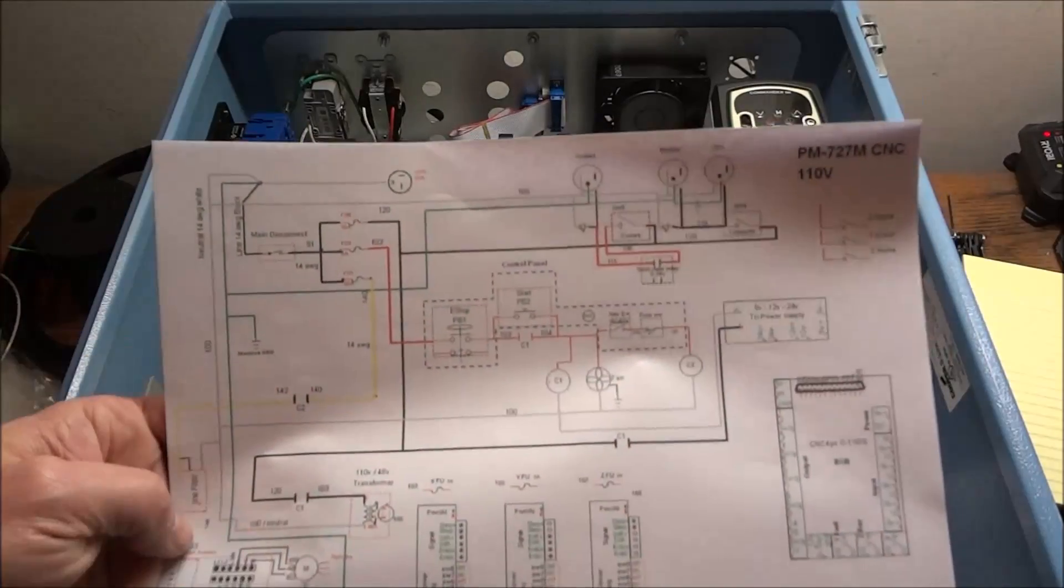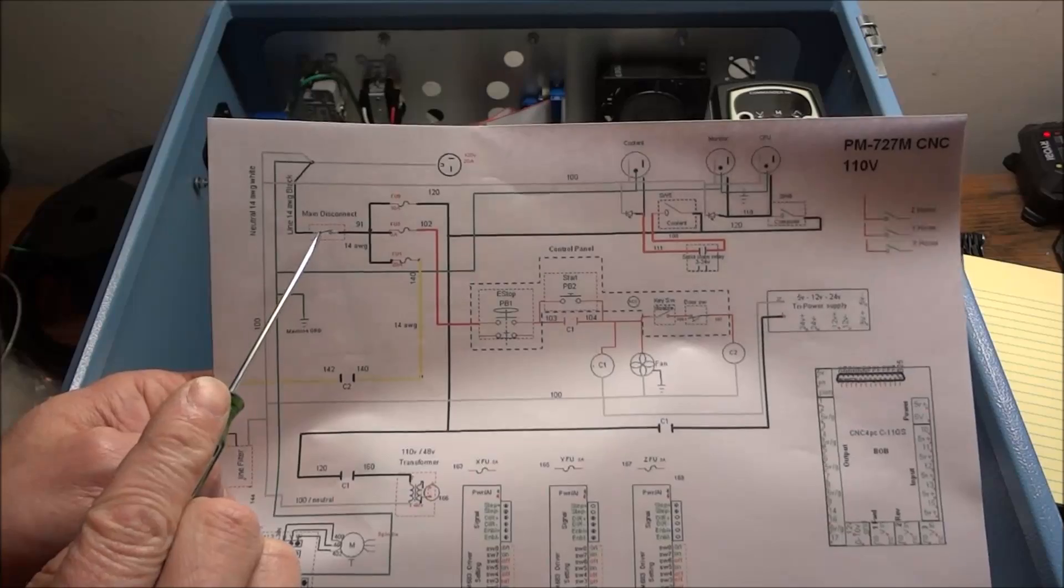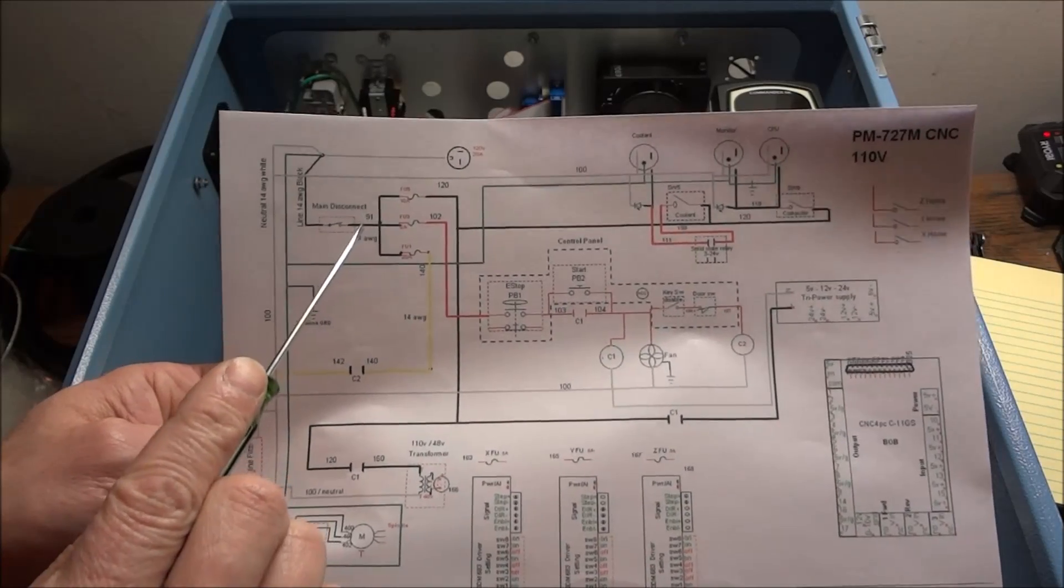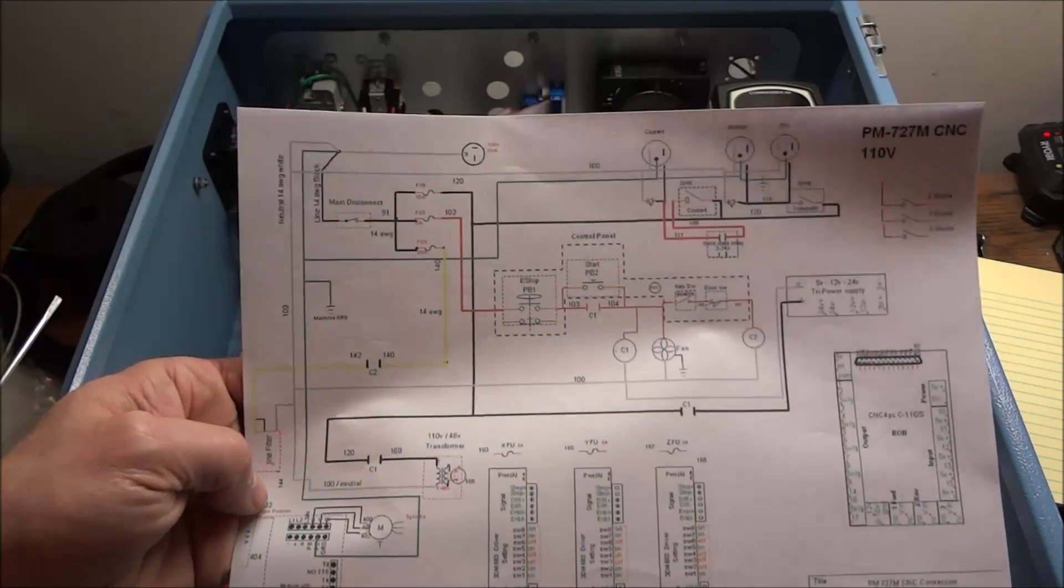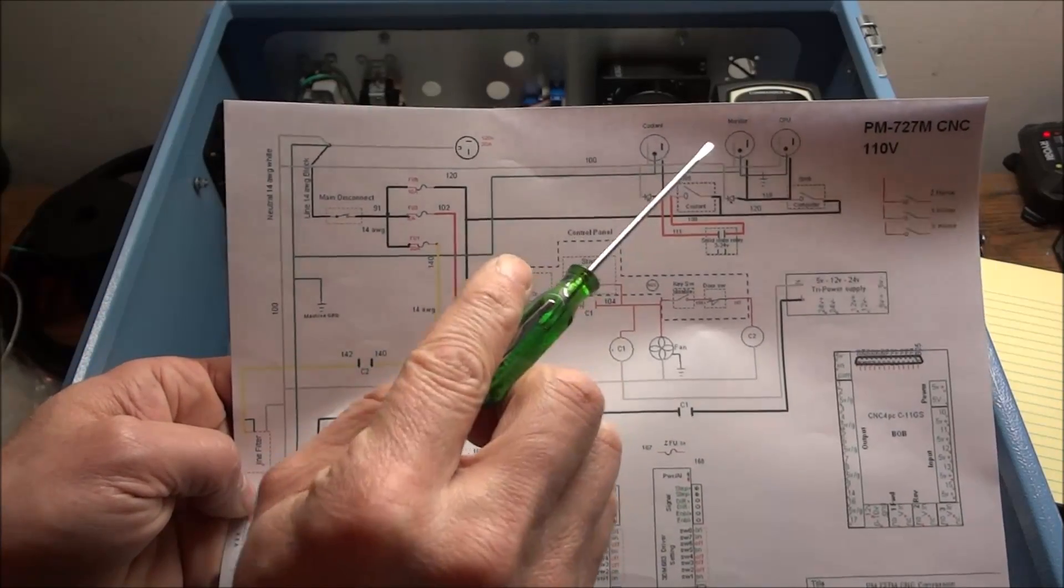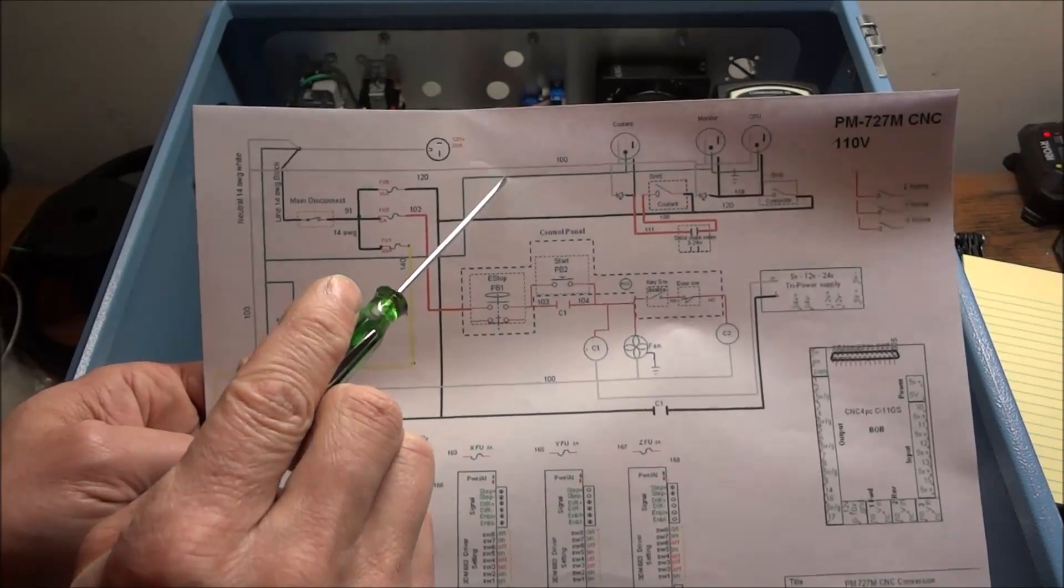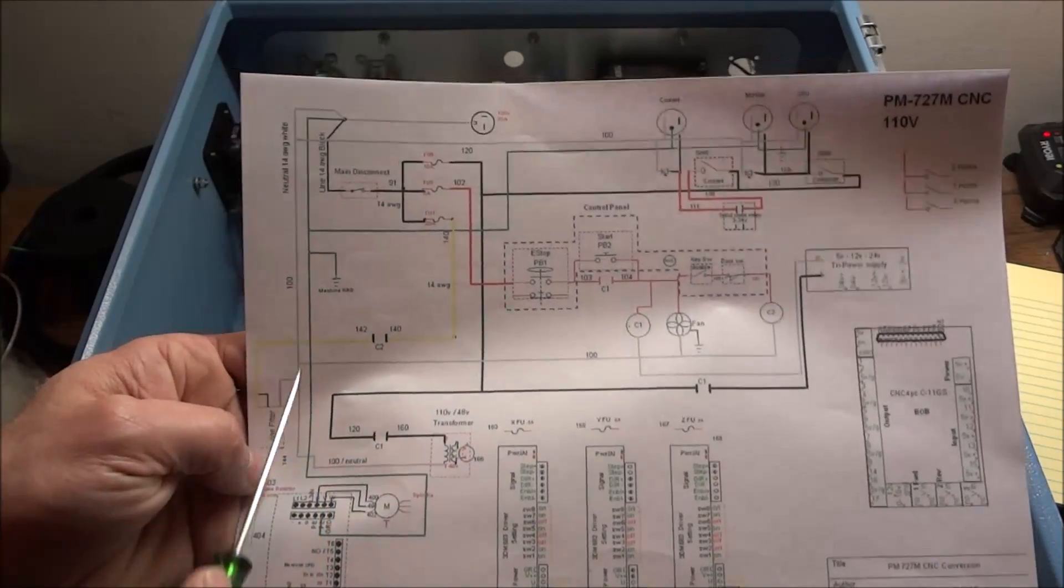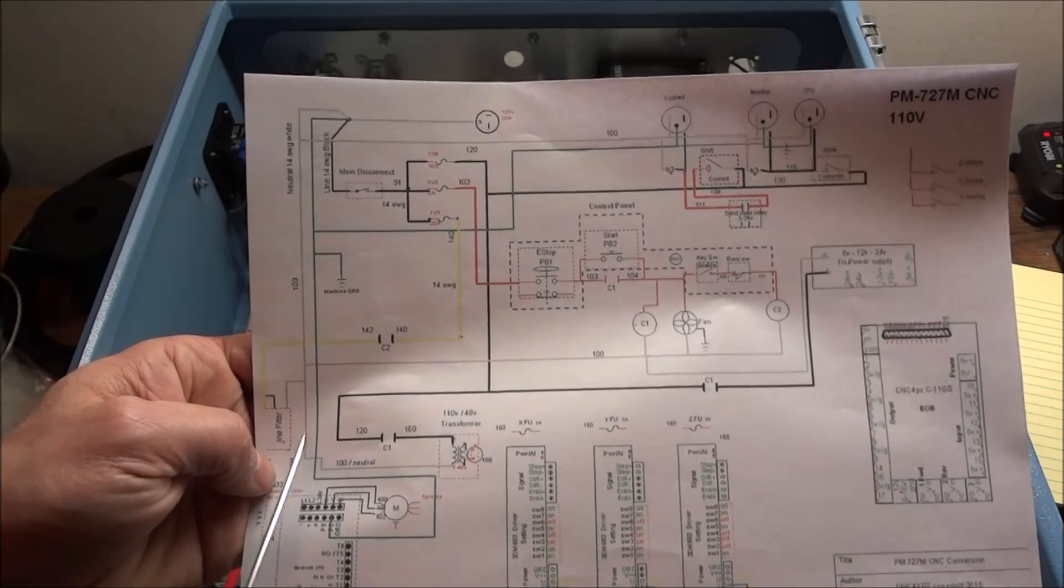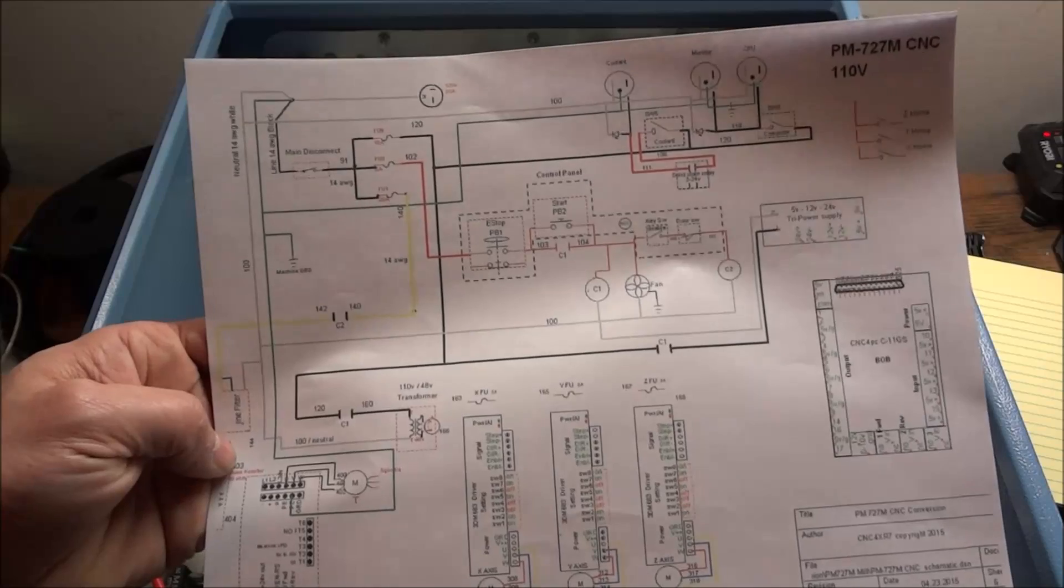Alright, so let's do a recap of what we've done so far. We've brought power in through our main disconnect to our three main fuses. We've ran power over to our three outlets along with our neutral wire and our ground wire, and we've also landed our neutral wire and our ground wire to our terminal strip.